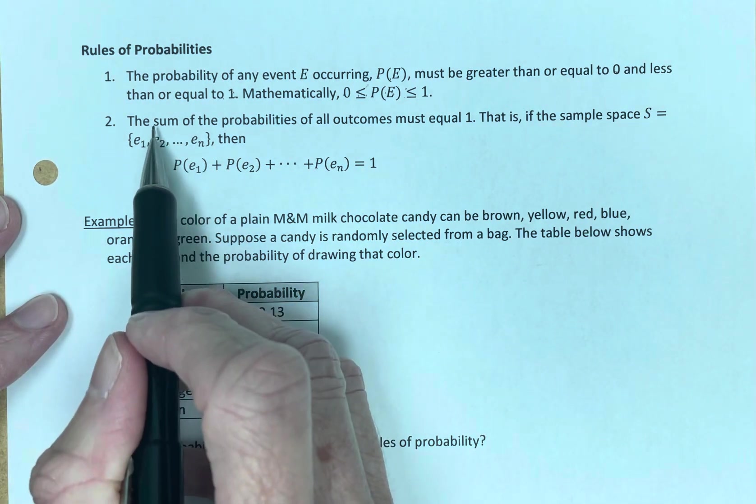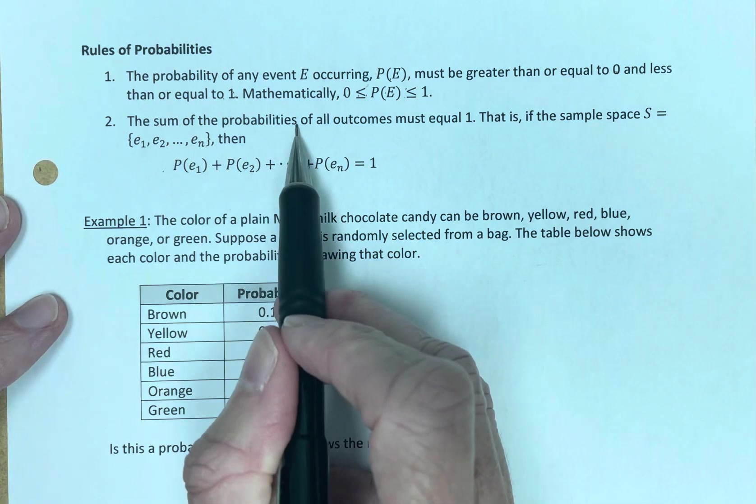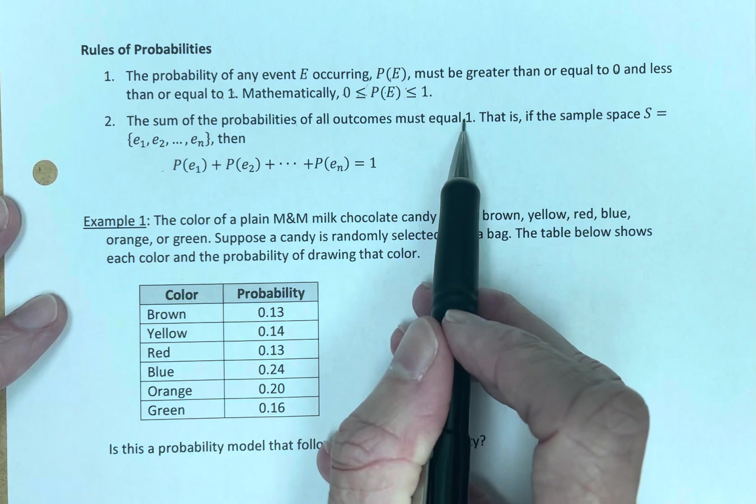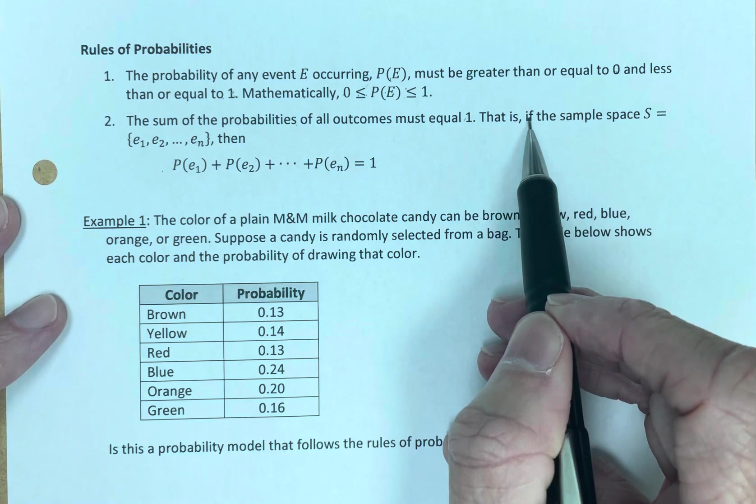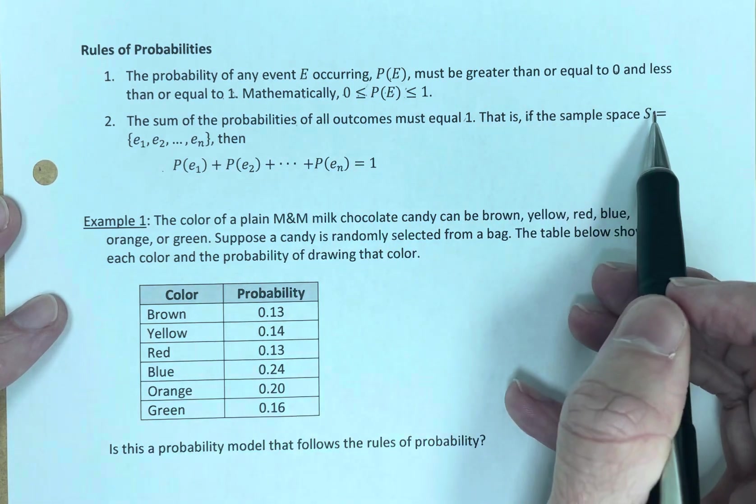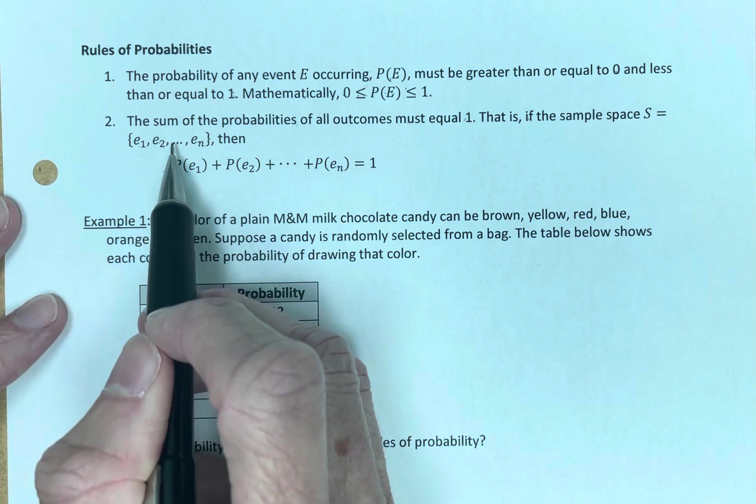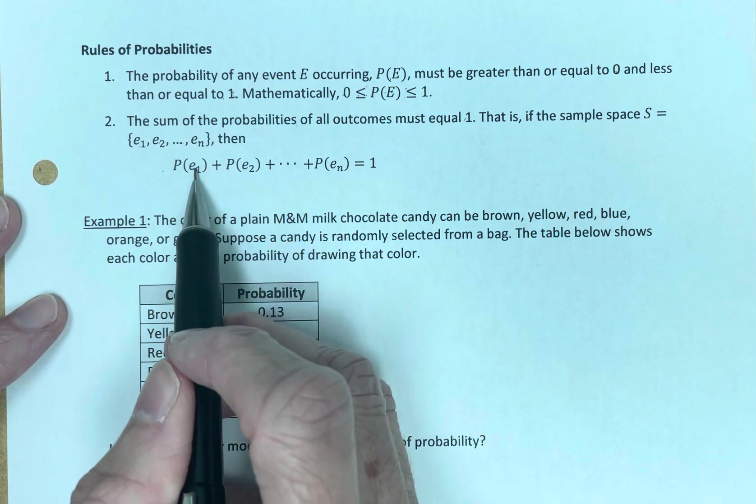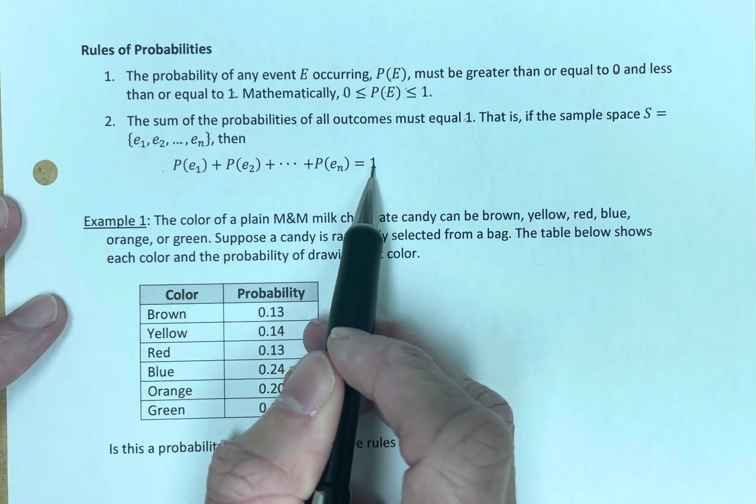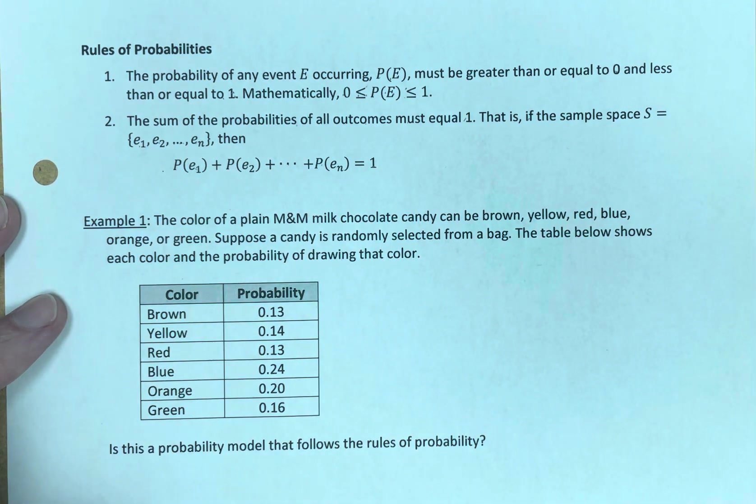And number two, second rule, the sum of the probabilities of all outcomes must equal one. One, of course, being 100%. We want to have all outcomes included. That is, if the sample space is S equals event one, comma event two, comma event three, et cetera, et cetera, et cetera, to the final event. Then adding up these individual probabilities will give us one. We've included everything.